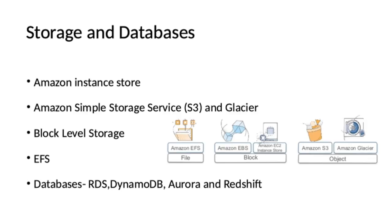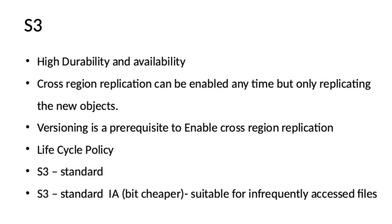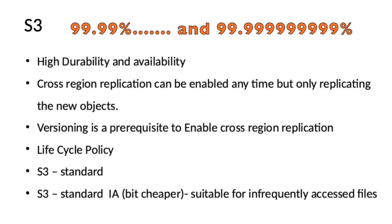Please note down each key point I am going to explain on the next few slides so that you can have a look before you enter the exam hall. You can also download this slide from the link mentioned in the description box. Amazon S3 is highly durable and available by itself. Amazon S3 guarantees four nines availability and nine nines durability. Four nines availability means 99.99% and nine nines means 99.999999999% durability.